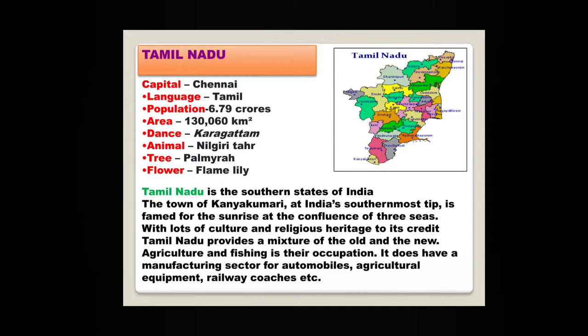Tamil Nadu — capital Chennai. Tamil Nadu is the southern state of India. The town of Kanyakumari at India's southernmost point is famed for the sunrise at the confluence of three seas. With lots of culture and religious heritage, Tamil Nadu provides a mixture of the old and the new. Agriculture and fishing is their occupation. It also has a manufacturing sector for automobiles, agricultural equipment, railway coaches, etc.